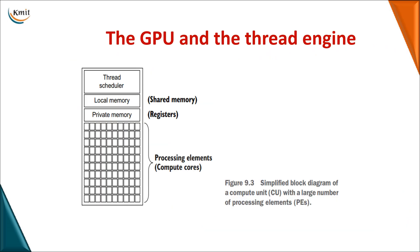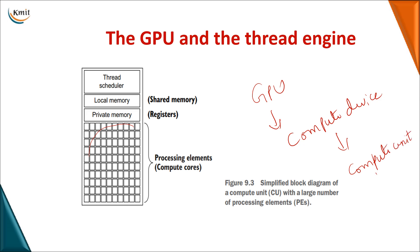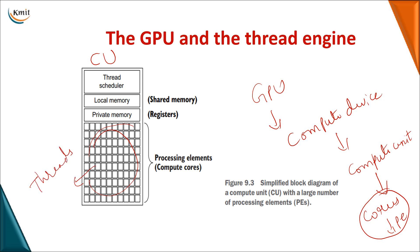Looking at the compute unit level: each compute unit internally has multiple processing elements. The GPU has a compute device, the compute device has compute units, and each compute unit has multiple cores — which we call processing elements. This diagram shows a single compute unit with multiple cores or processing elements. You assign that many threads to each core so each core performs an operation. Instead of a single processor, you are using multiple cores capable of performing operations simultaneously. Each compute unit also has its own local memory.